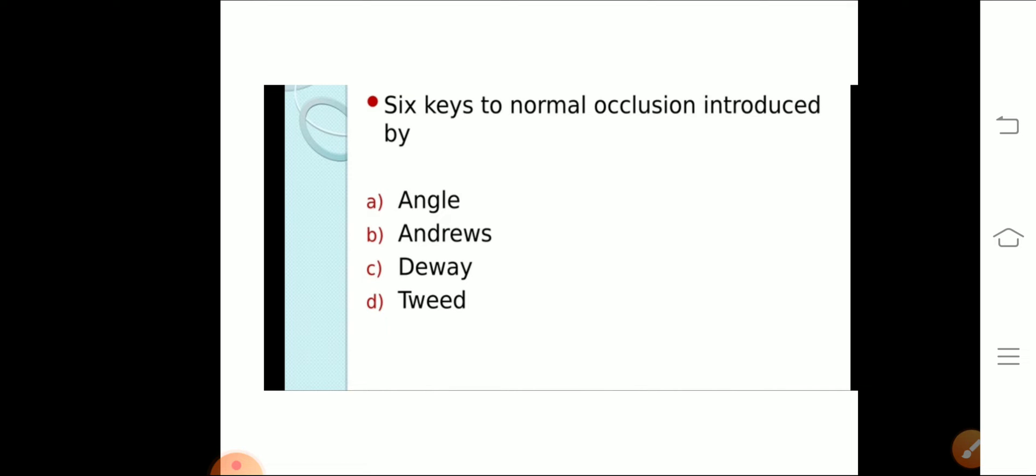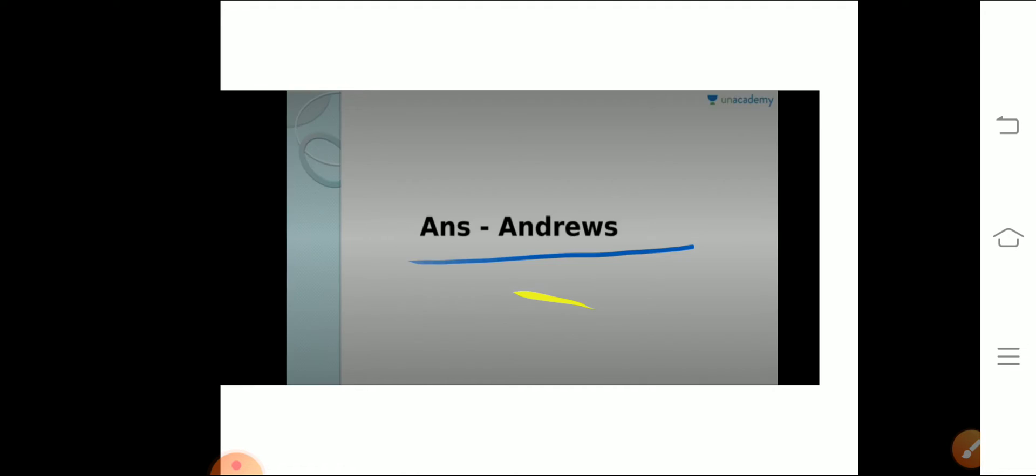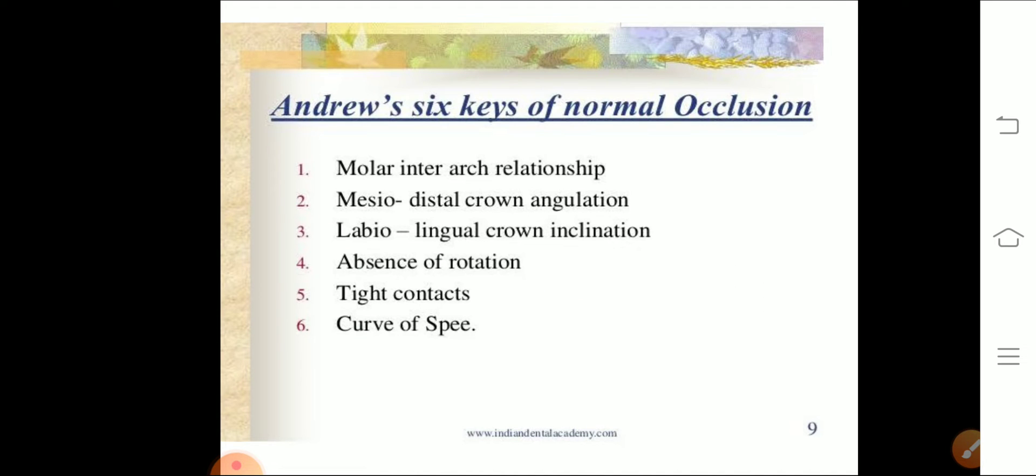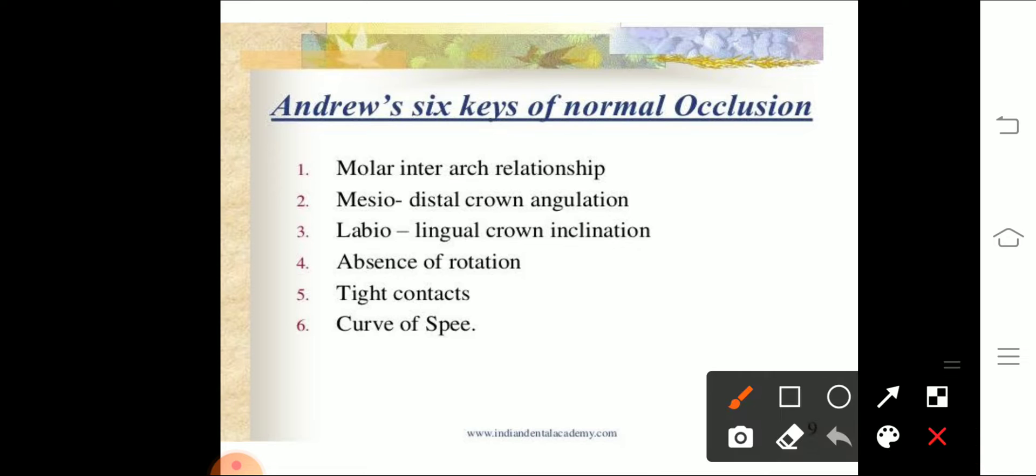So let's study the six keys of normal occlusion. The first key is molar inter-arch relationship. The second key is mesiodistal crown angulation. The third key is labiolingual crown inclination. Fourth is absence of rotation. Fifth is tight contact and sixth is curve of Spee.